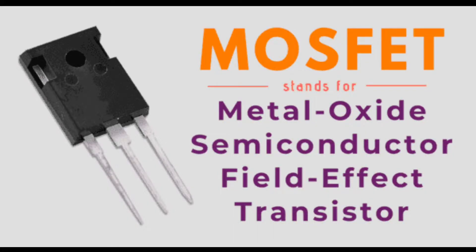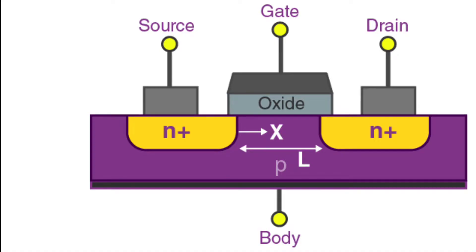Welcome to my channel. Today I describe MOSFET, the Metal Oxide Semiconductor Field Effect Transistor. The MOSFET is a type of field effect transistor most commonly fabricated by the controlled oxidation of silicon. It has an insulated gate.